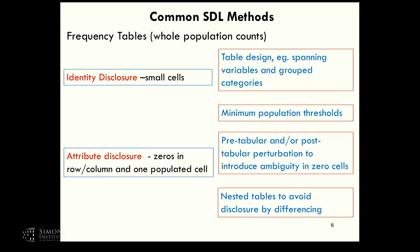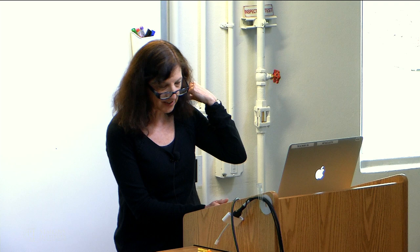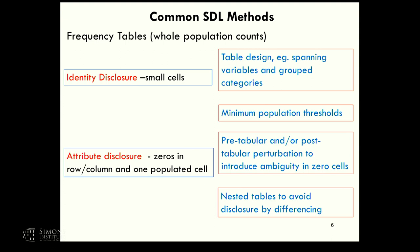Frequency tables from whole population counts raise identity disclosure concerns about small cells. Swapping was used in some contexts—America does swapping on surveys, though you would not see that across Europe. So, methods varied by country and data type.